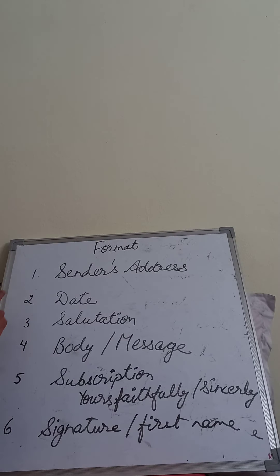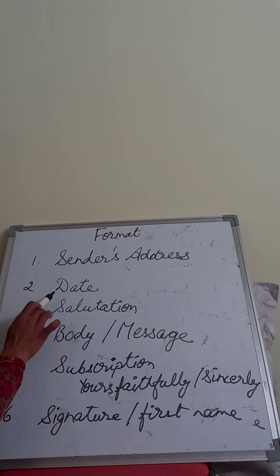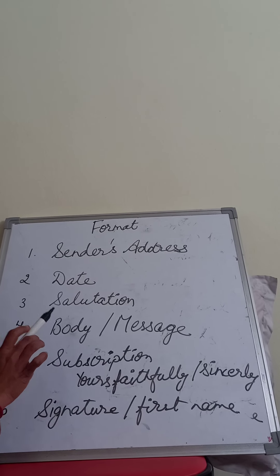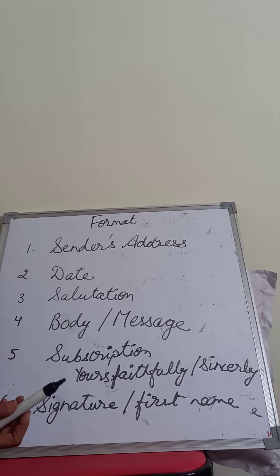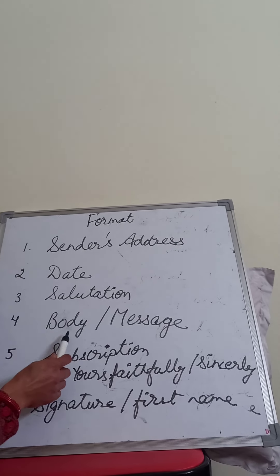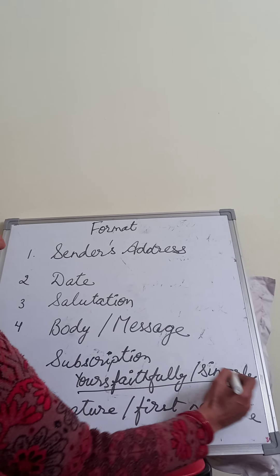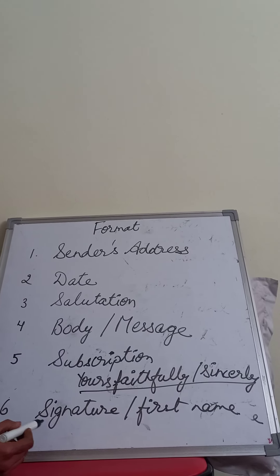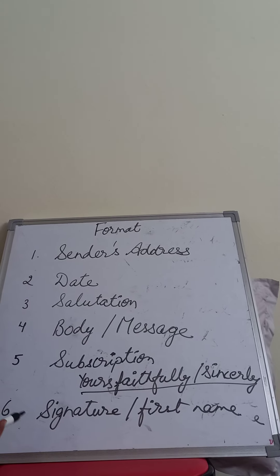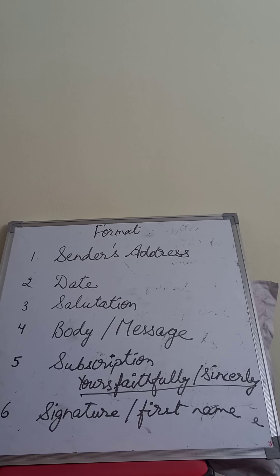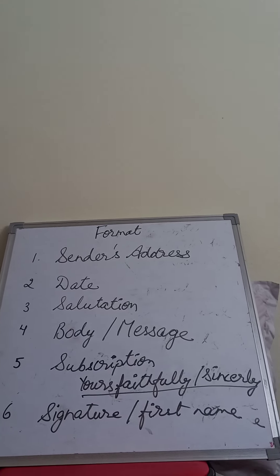So, to summarize the format: the first point is the sender's address — the writer's address. The second thing is the date. The third one is the salutation — dear Bhaiya, dear Didi, dear Rahul, dear Rohit, anybody's name. After that, the body and message. Then the subscription — yours faithfully, sincerely, anything. After that, the signature — your first name, not the whole name. I hope this is now clear to you — how we have to write an informal letter.